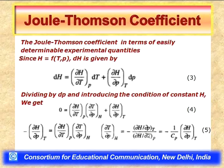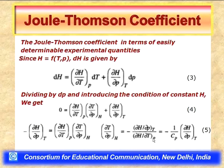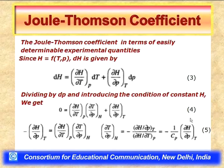Therefore: μ_JT = (∂T/∂P)_H = −(1/C_P) · (∂H/∂P)_T. This correlates the Joule-Thompson coefficient with another experimentally determinable quantity. The remaining question is how to evaluate (∂H/∂P)_T. We will use the thermodynamic equation of state — to be derived in later sections — which gives: (∂H/∂P)_T = −T(∂V/∂T)_P + V.